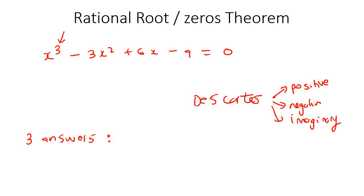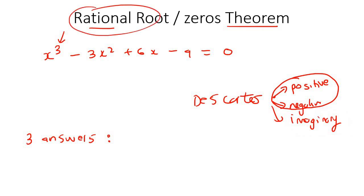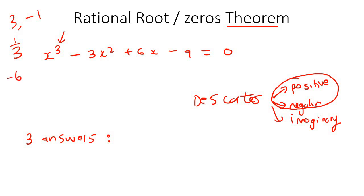Now, let's say, for example, that there are going to be some positive and negative roots. The rational root theorem gives us a good guideline of what those answers might be. It doesn't tell us exactly what they are, but it tells us what they might be. It doesn't tell us anything about imaginary roots — it only tells us about rational roots. Rational roots are nice numbers like 3, negative 1, 1 over 3, negative 6, negative 2. It doesn't tell us the exact answers; it just gives us a guideline of what the answers might be.